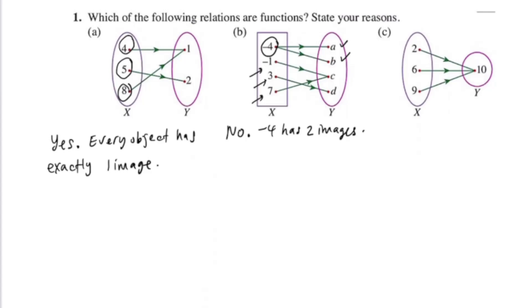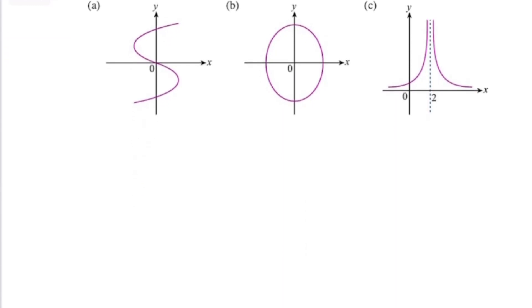For C, now you can see that 2 has one image, 6 has one image, 9 has one image. All of them share the same image, then it's not a problem having all objects sharing the same image. So yes, it is still a function. Why? Because every object has exactly one image.